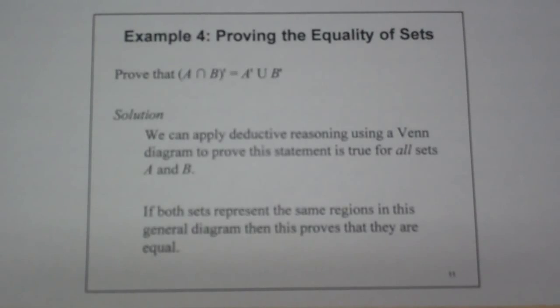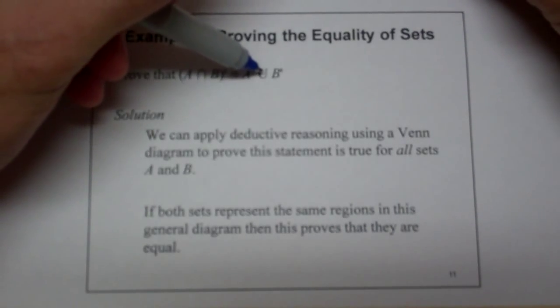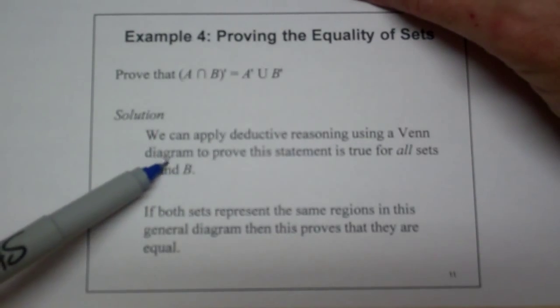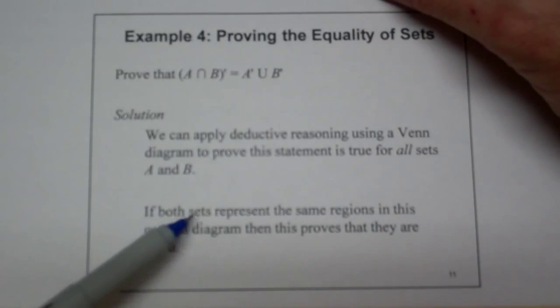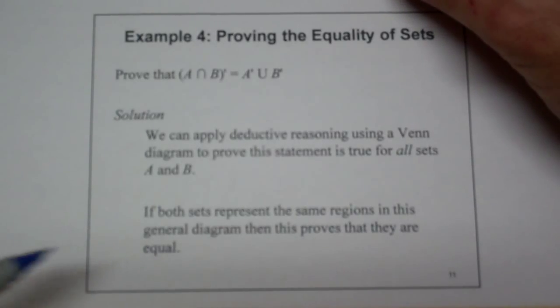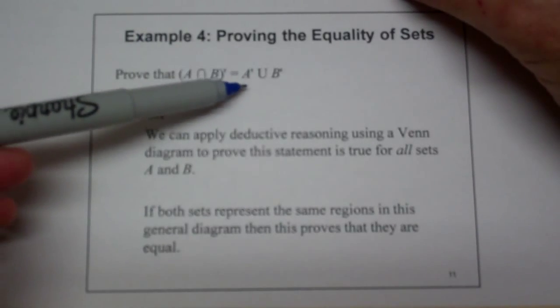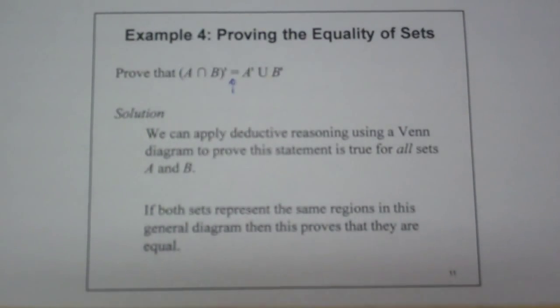Our last objective is proving the equality of sets — we want to prove DeMorgan's Law. If we wanted to prove that (A intersect B) complement equals A complement union B complement, we can use a Venn diagram. This statement is true for all sets A and B if both sides represent the same regions in the general diagram, which would prove equality. That way we're doing it in general instead of with specific elements.